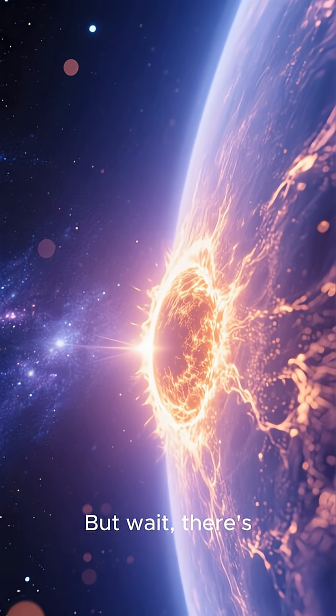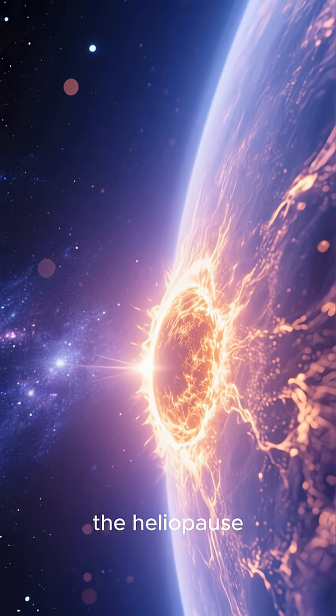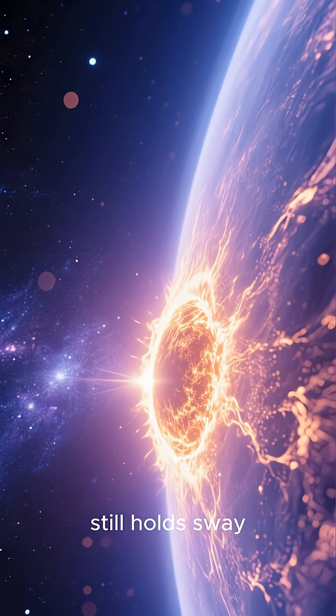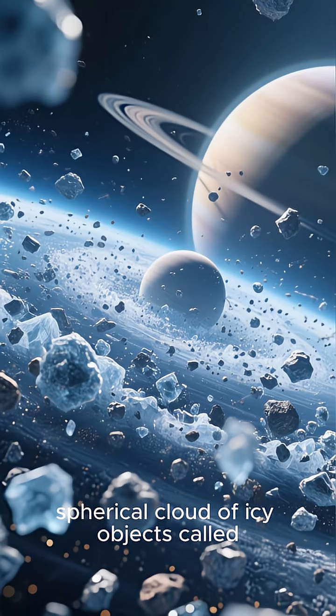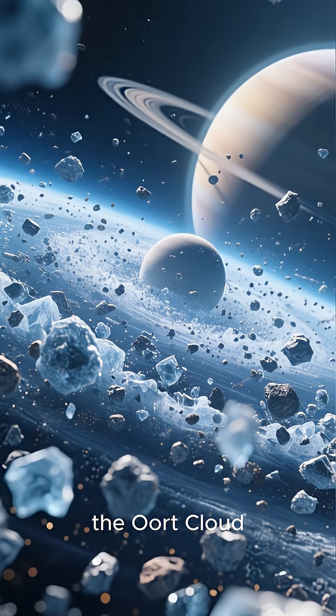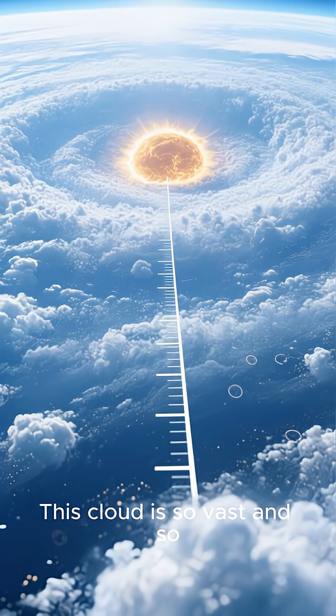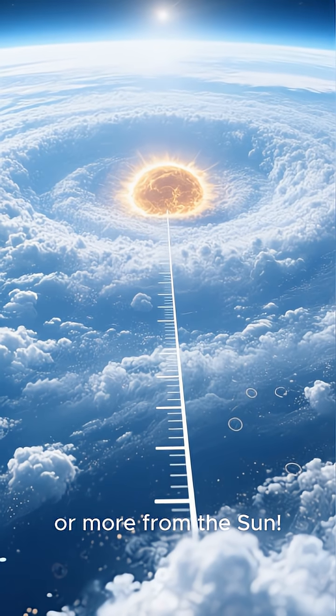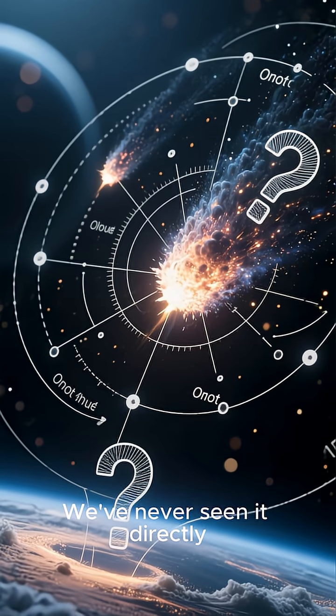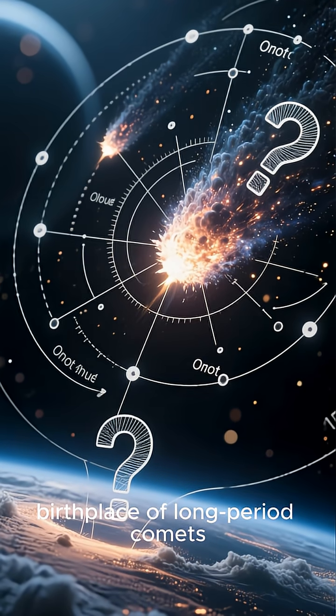But wait, there's more. Even beyond the heliopause, the sun's gravity still holds sway. It's thought to be surrounded by a gigantic, spherical cloud of icy objects called the Oort cloud. This cloud is so vast and so far away that its outer edge could be up to a light year or more from the sun. We've never seen it directly, but it's believed to be the birthplace of long-period comets.